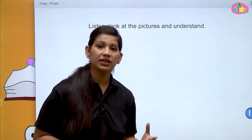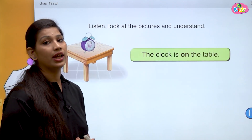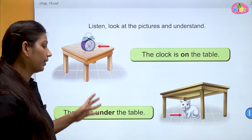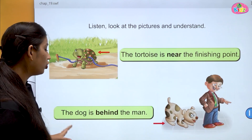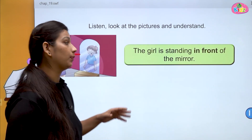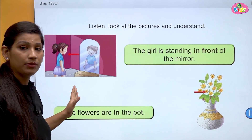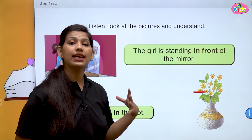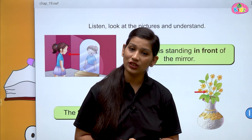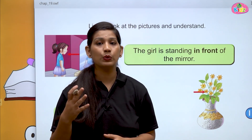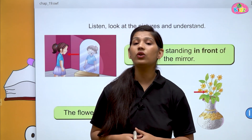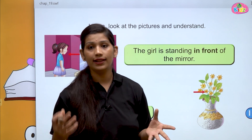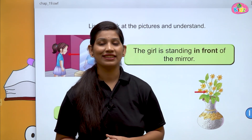Let us revise all the position words once again. On ka matlab hota hai ooper — the clock is on the table. Under — the cat is under the table, neche hai. Near — the tortoise is near the finishing point, finishing point ke paas hai. Behind — the dog is behind the man, man ke piche hai. In front of — the girl is standing in front of the mirror, mirror ke saamne. And in — the flowers are in the pot, pot ke andar. That's all students for today's session on position. I hope you can clearly understand the different words we use for different positions.